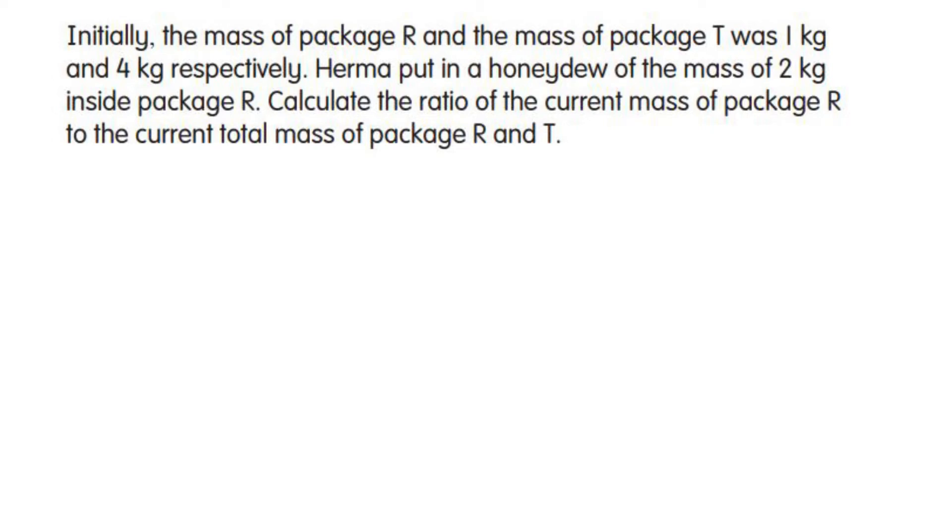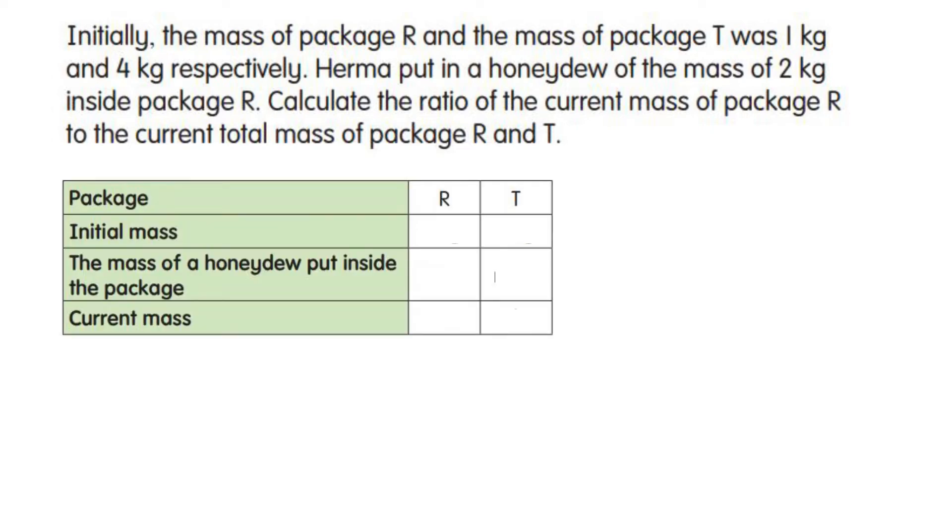Calculate the ratio of current mass of package R to the current total mass of package R and T. We can summarize the information given in the question in the form of a table. Initial mass of R is one kilogram and initial mass of T is four kilograms. The mass of honeydew put inside package R is two kilograms.